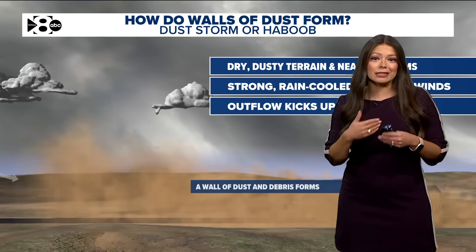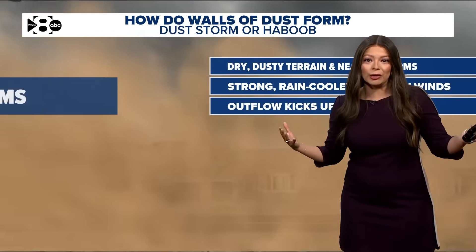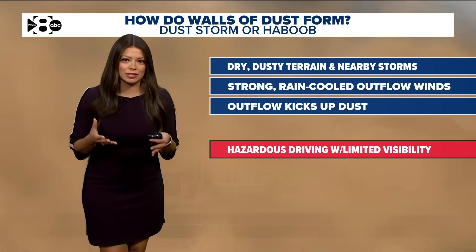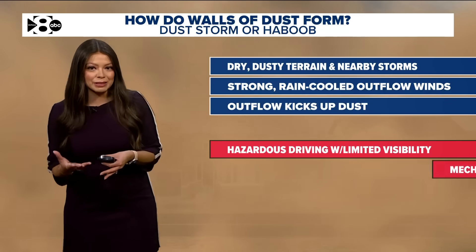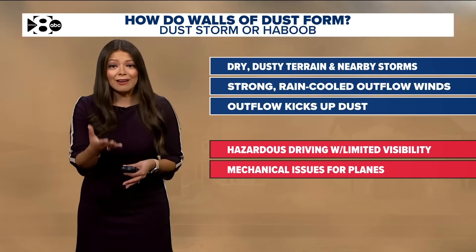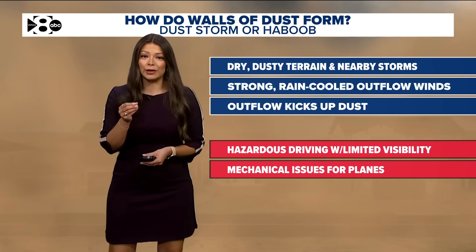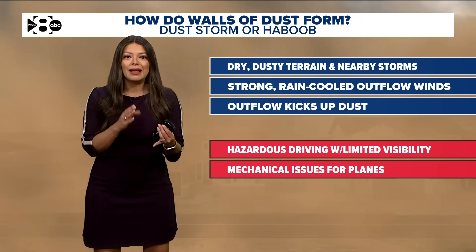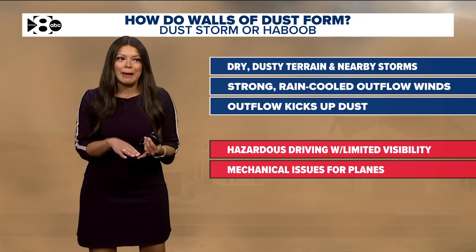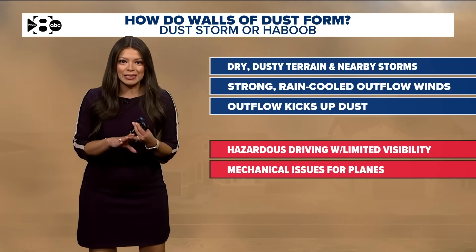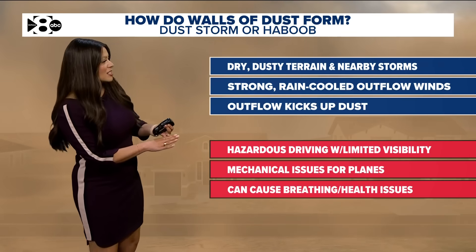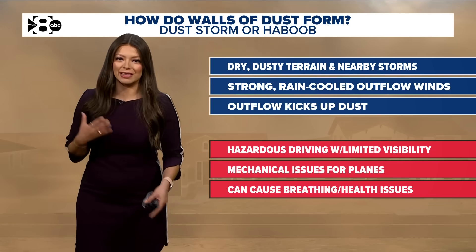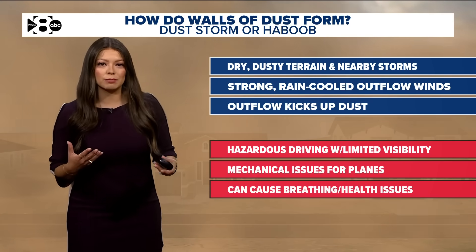We often see this in the form of roll clouds, but we don't have the dust necessary for these dust storms here. This causes hazardous driving with limited visibility, as you saw in the video. It also can cause mechanical issues for airplanes, which is why there was a ground stop — not just because it lowered visibility, but think of all the dust that can get trapped in the engines. Unfortunately, this can also cause breathing and health issues because it lowers air quality.